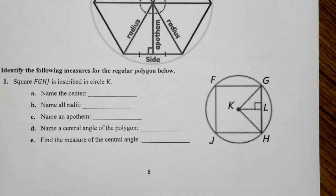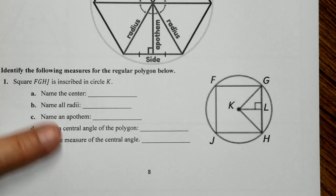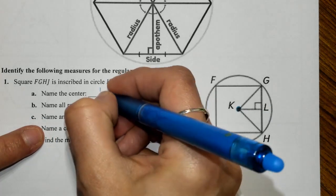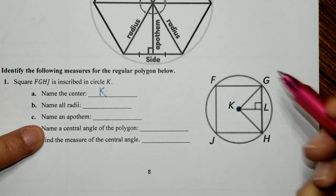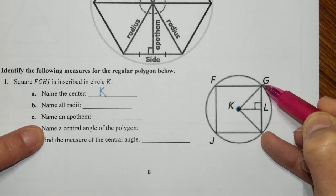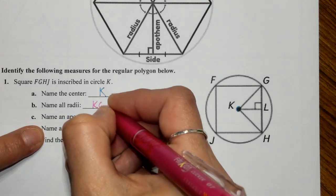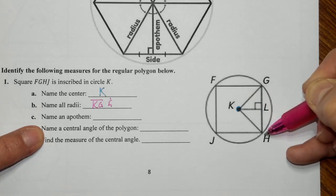Let's add in some colors. Square FGHJ is inscribed — meaning written inside — circle K. We want to name the center. The center is what the circle is named after, so that's K. Then we want to name all the radii. We only have two radii here — from the center to the circle — segment KG and segment KH going all the way to the circle.